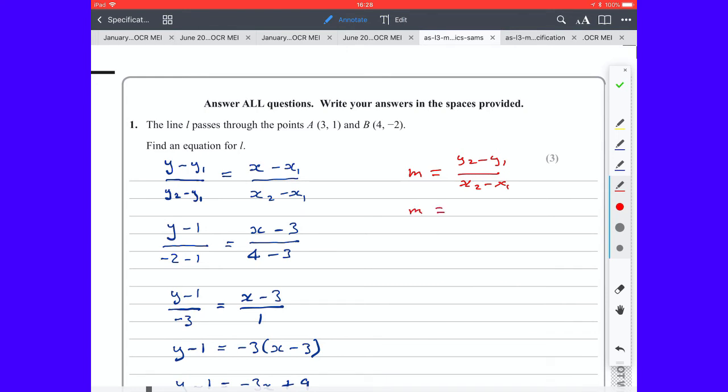So we can say the gradient is given by (-2 - 1)/(4 - 3). -2 minus 1 is -3 and 4 minus 3 is 1. So the gradient of the line between A and B is -3.